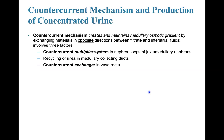We also have what's referred to as a counter current mechanism. This creates and maintains medullary osmotic gradients by exchanging materials in opposite directions between the filtrate and the interstitial fluids. This involves three factors: the counter current multiplier system in the nephron loop of juxtamedullary nephrons, the recycling of urea in the medullary collecting ducts, and the counter current exchanger in the vasa recta, which are the capillaries of the ducts of medullary nephrons.